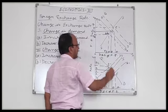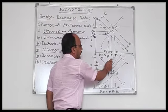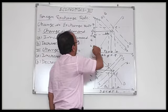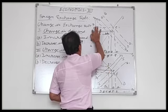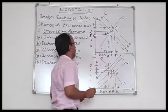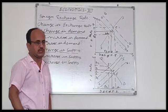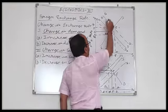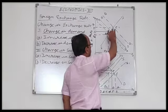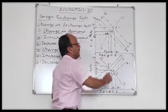In the given diagram, on the x-axis we take demand and supply of foreign exchange, shown as D and S of foreign exchange. On the y-axis we have the foreign exchange rate. DD is the demand curve and SS is the supply curve of foreign exchange. They intersect each other at the equilibrium point.